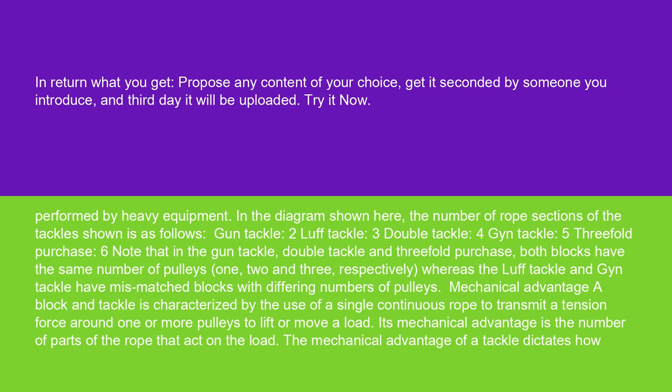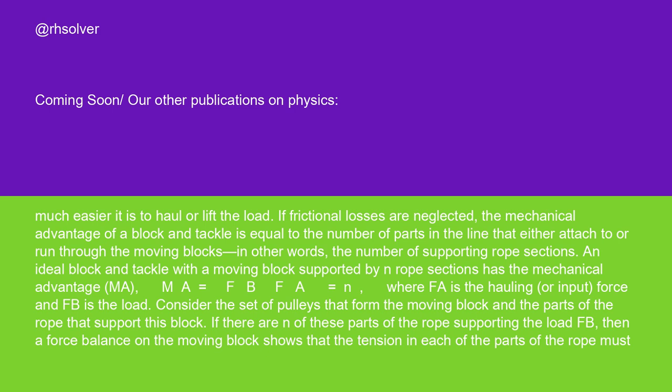Mechanical advantage: A block and tackle is characterized by the use of a single continuous rope to transmit a tension force around one or more pulleys to lift or move a load. Its mechanical advantage is the number of parts of the rope that act on the load. The mechanical advantage of a tackle dictates how much easier it is to haul or lift the load.